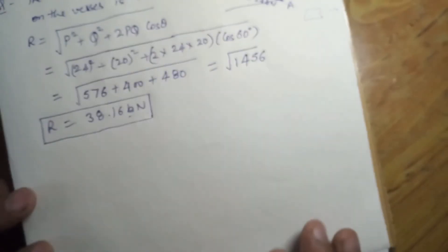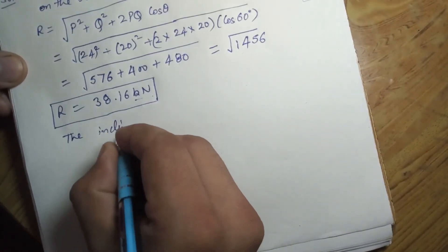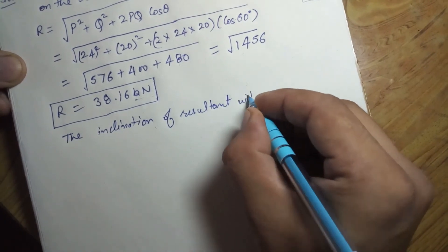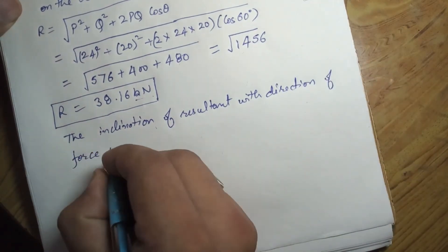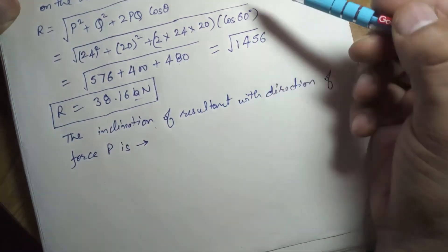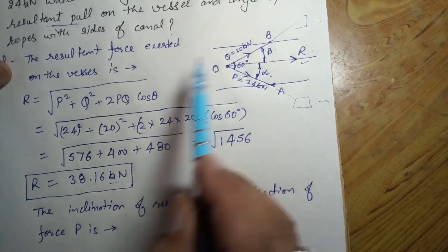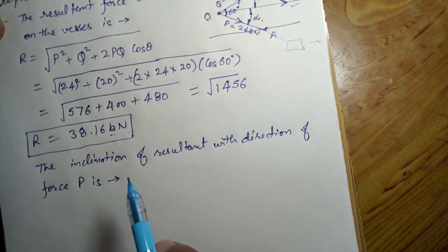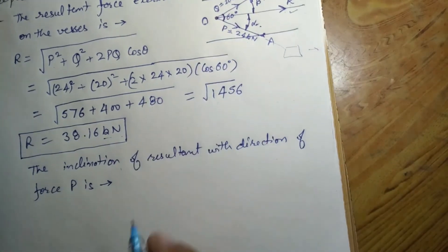Now we find the direction using the parallelogram theorem formula for inclination. The inclination of the resultant with the direction of force P is found using the angle formula. When calculating alpha or beta, you must be careful about which force is P and which is Q, and the value of theta. The formula for the angle of inclination is derived from the same parallelogram theorem discussed earlier.